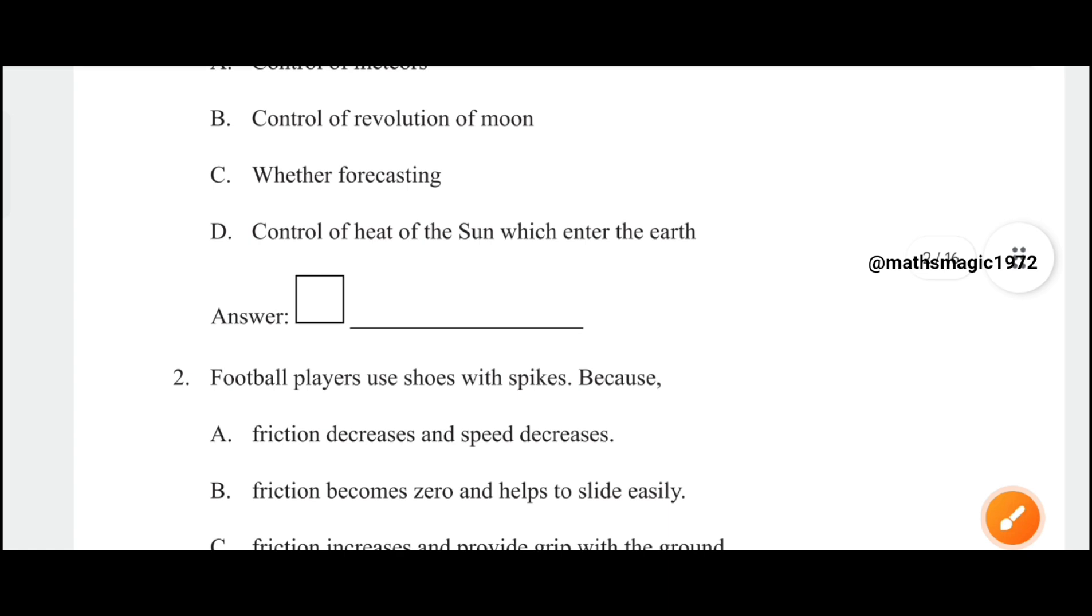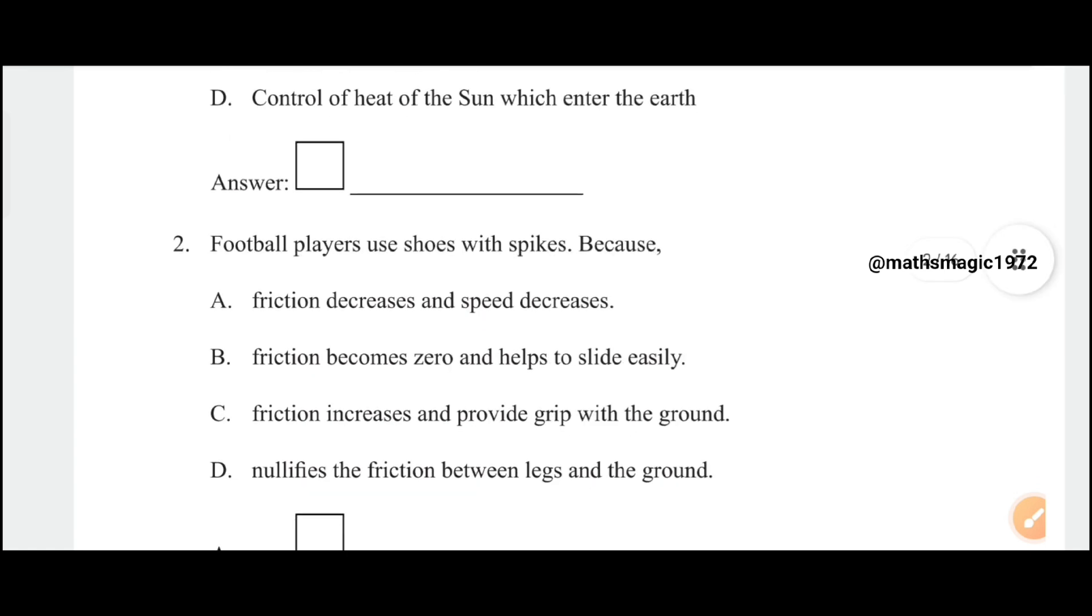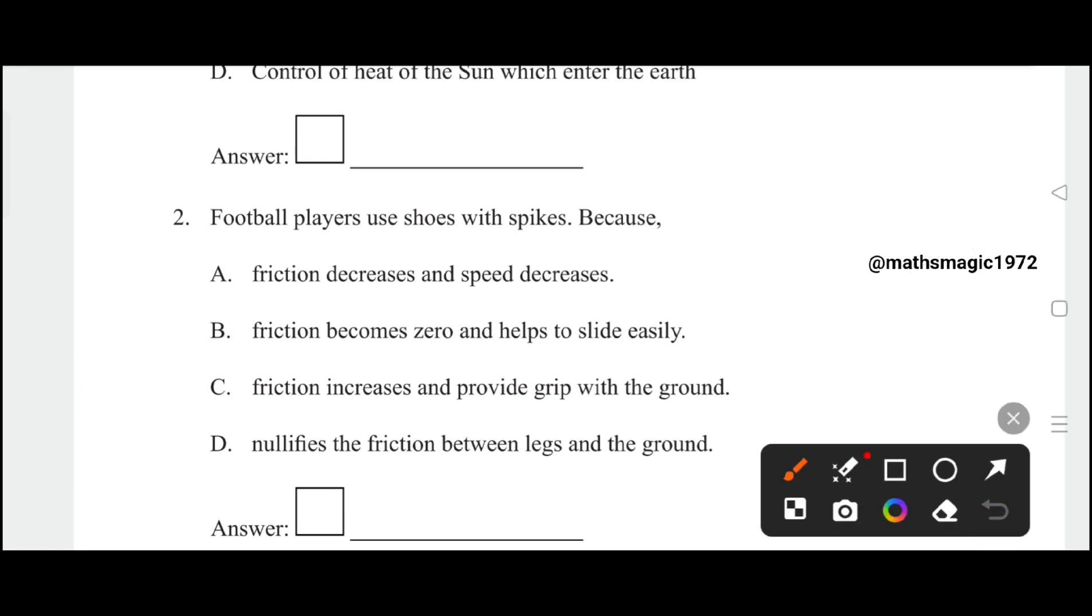Football players use shoes with spikes because: A) friction decreases and speed decreases, B) friction becomes zero and helps to slide easily, C) friction increases and provides grip with the ground, D) nullifies the friction between legs and the ground. The correct answer is option C, friction increases and provides grip with the ground.